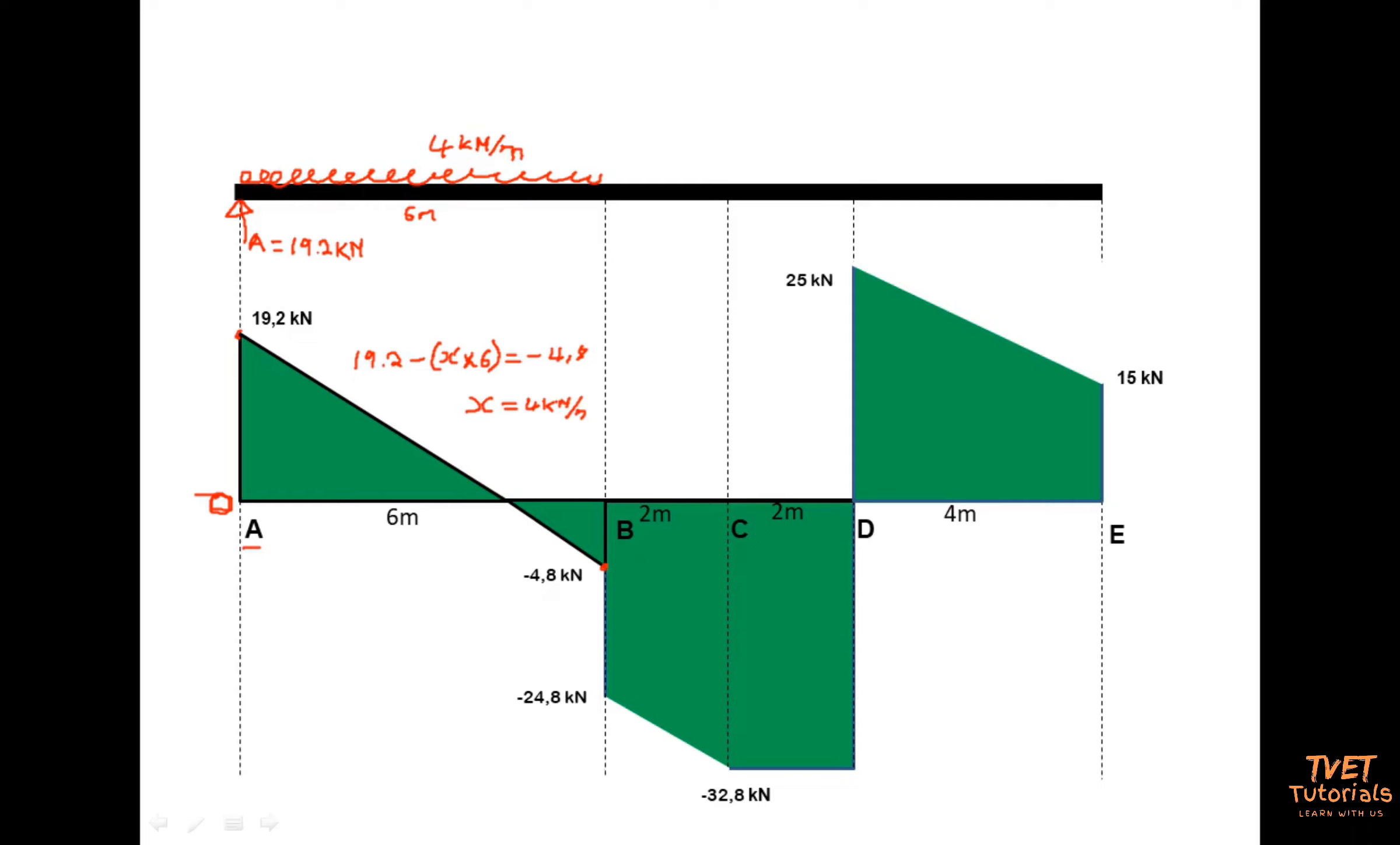So another way of calculating this if you want to use a simple method is to say what is the distance or what is the gap between 19.2 and negative 4.8. So because you are looking for the difference you add the two values.